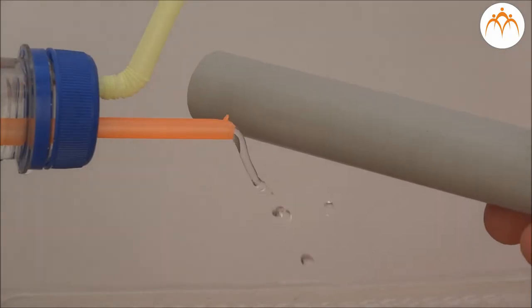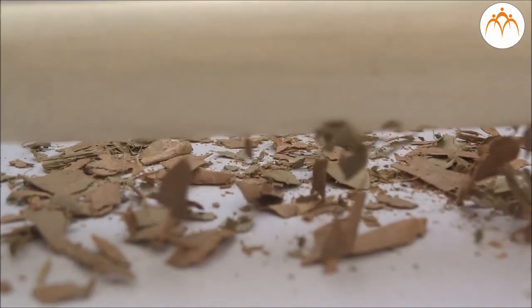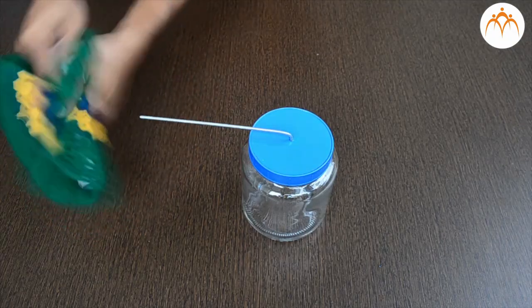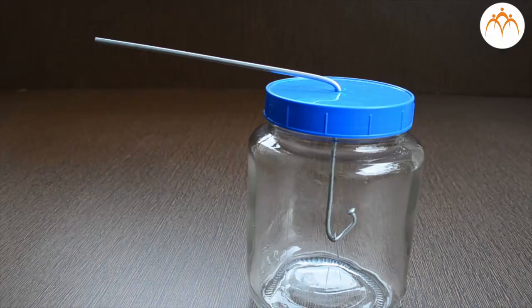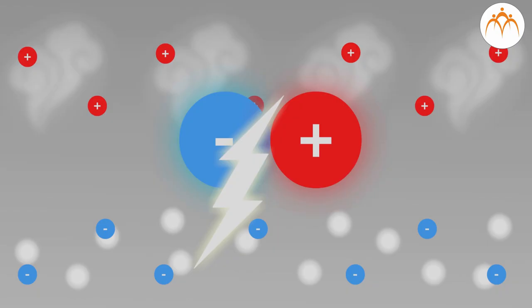In summary, we learned more about charges by doing activities with everyday things. We also built an electroscope. With the help of animation, we found out why lightning occurs. Learn more about static electricity with the help of the internet.